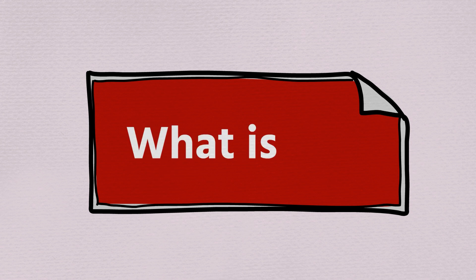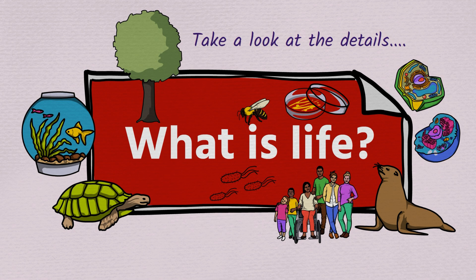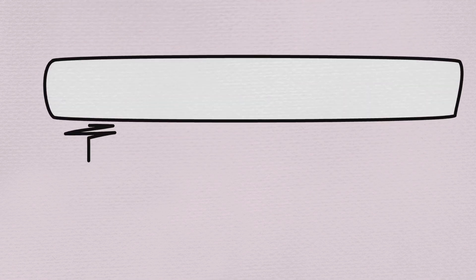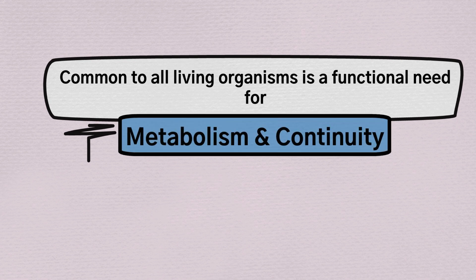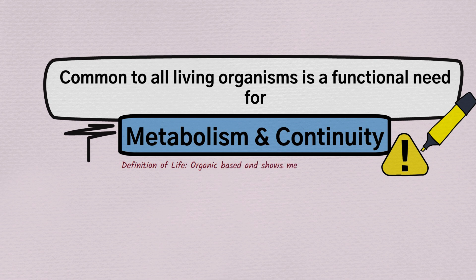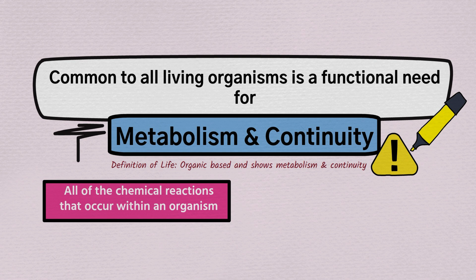Now you know that biology is the scientific study of life — but what is life? All living things share a common functional need for two things: metabolism and continuity. A definition of life could be something that is organic-based and shows metabolism and continuity. Be able to define metabolism: it's all of the chemical reactions — or the sum of the chemical reactions — that occur within an organism.